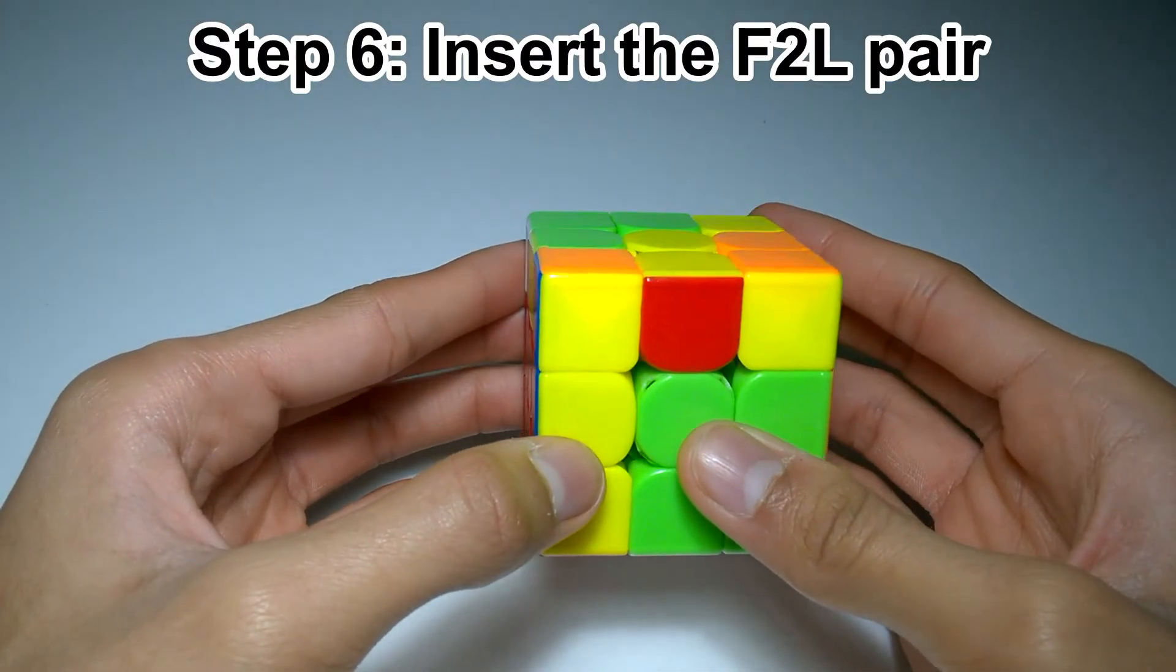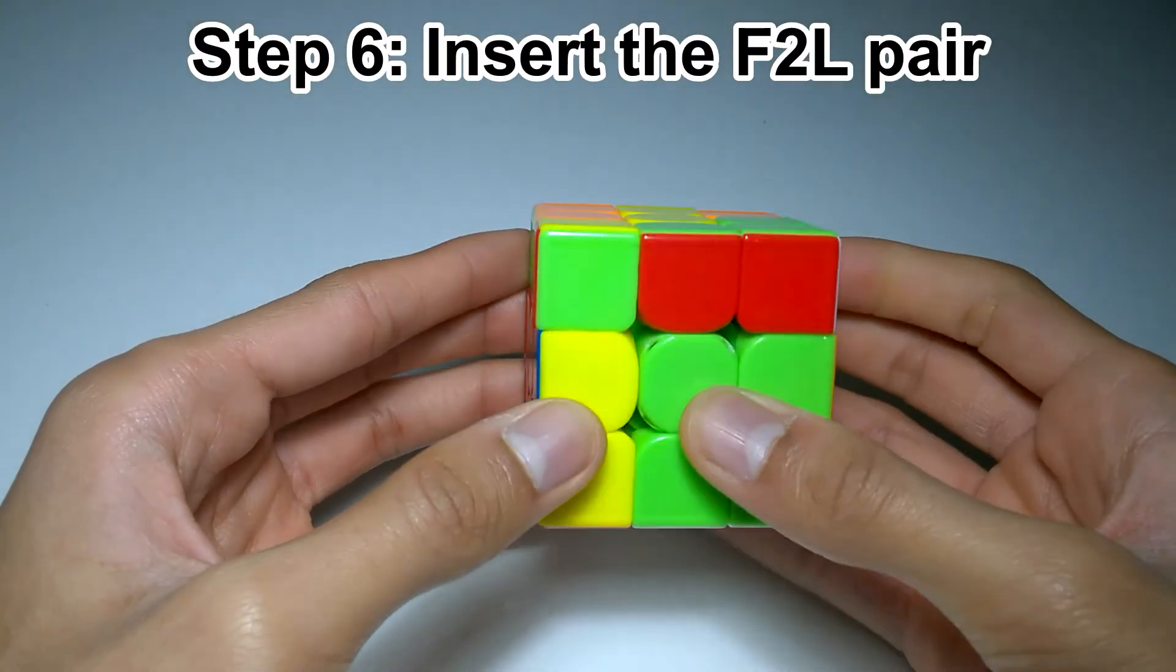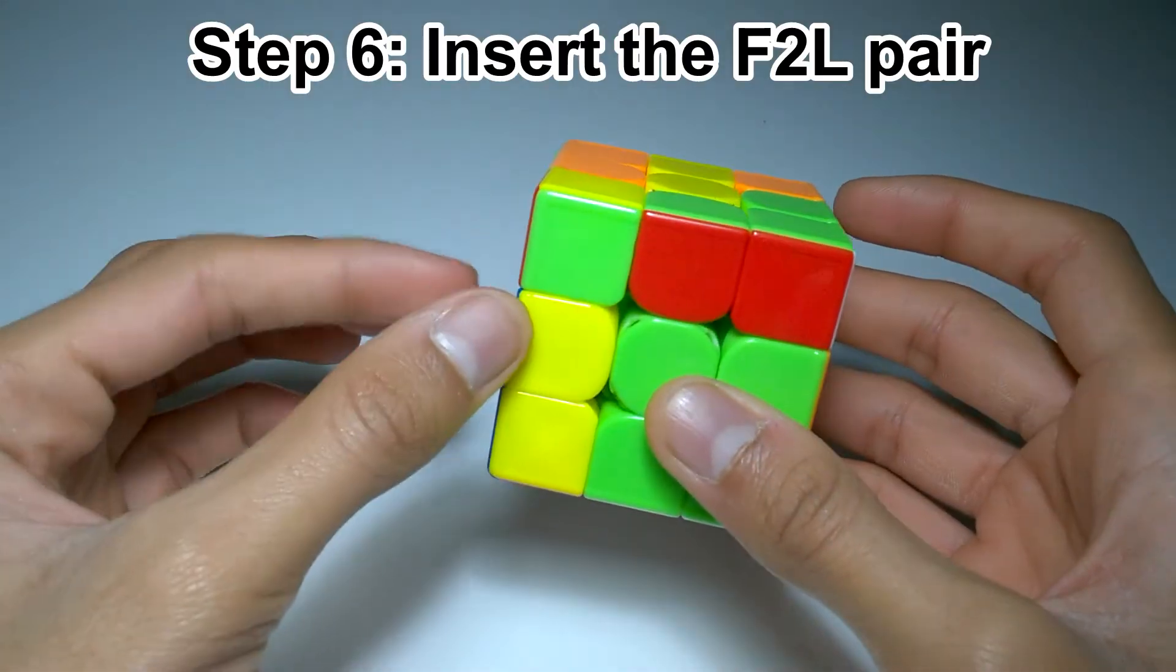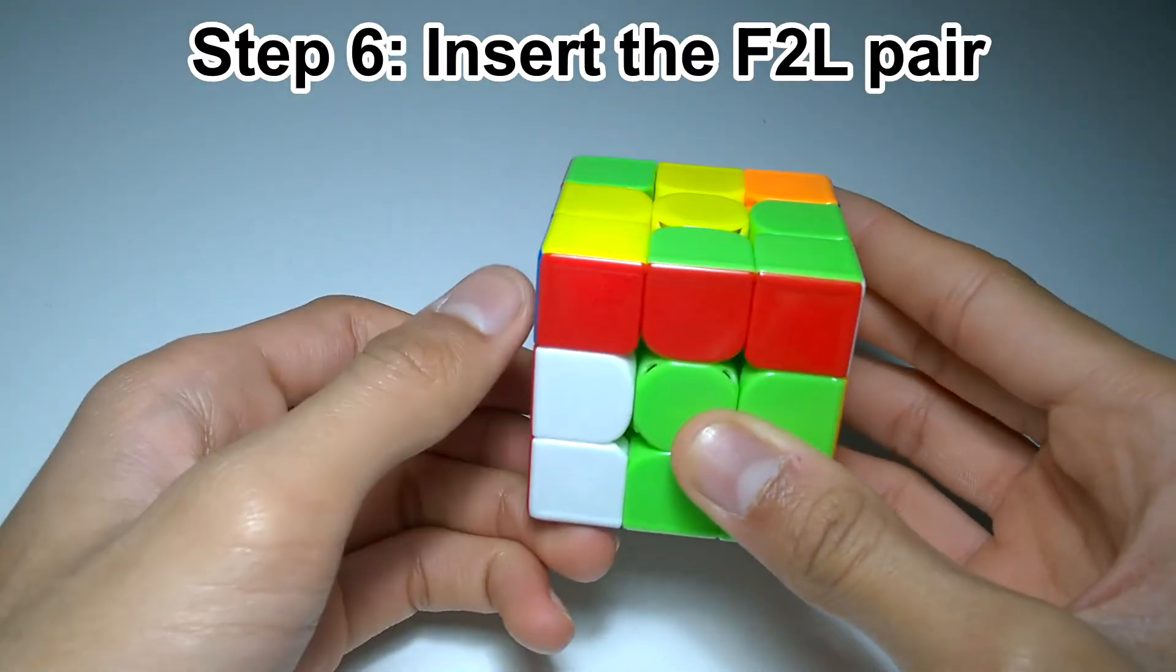Finally, for step six, we insert the F2L pair using one of the algorithms from the beginning of the video. So here, it needs to go into the left. So we'll do L' U L.